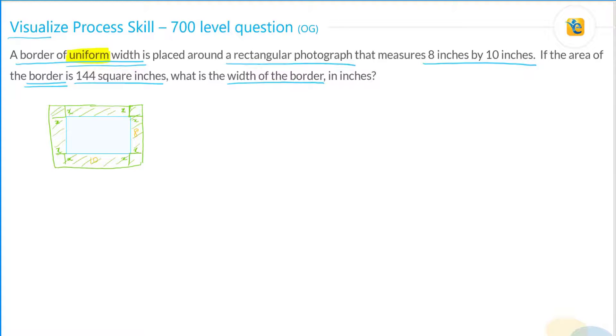Now, if the area of the border—the green shaded area—is 144 inches, what is the width of the border? What we really need to figure out is, what is this x? That is what we need to figure out.